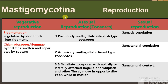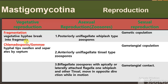Here we are discussing reproduction among the members of Mastigomycotina. There are three different types of reproduction: vegetative reproduction, asexual reproduction by zoospores, and sexual reproduction. In vegetative reproduction, there is fragmentation — vegetative hyphae break into fragments which germinate into a new mycelium.